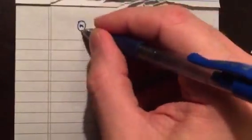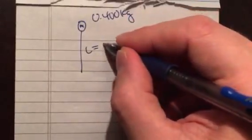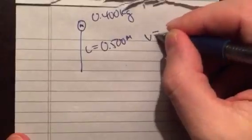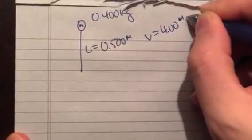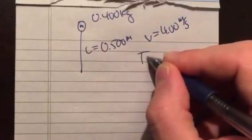Okay, so here's some mass m, and that mass has a mass of 0.4 kilograms, and the length of this rope or string is 0.5 meters, and the velocity is 4 meters per second. The question is, what is the tension in the string? How do we solve this?